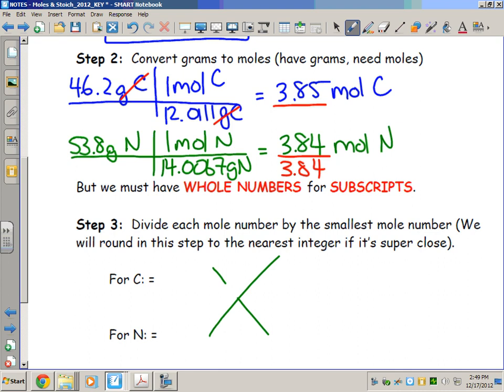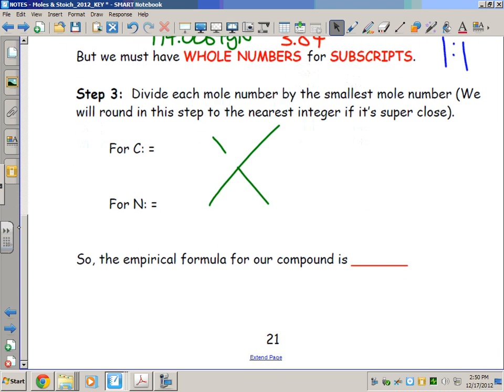What you end up with is 1.0026 to 1.0000, so it's a 1.0026 to 1, which is basically one to one.